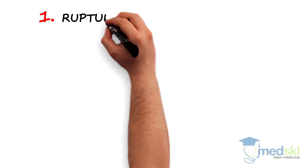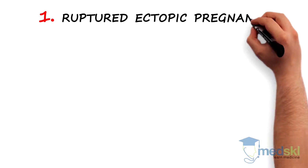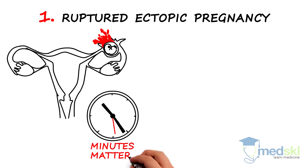Number one: ruptured ectopic pregnancy. Minutes matter here. This is an emergent, life-threatening condition where pregnancy occurs outside of the uterus.